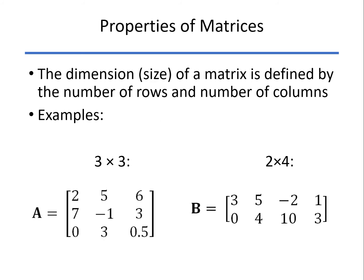The size of a matrix, or dimension as it's called, is the number of rows by the number of columns. On the left, we have a square matrix, a three-by-three. On the right, one with two rows and four columns—that's a two-by-four.